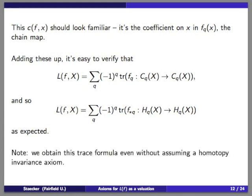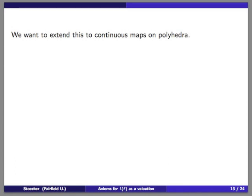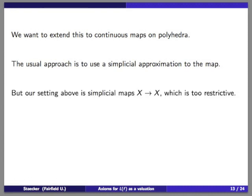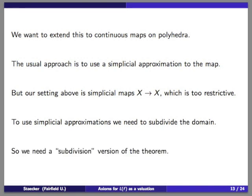If you take this invariant over the whole space, you get the trace in the chains, which equals the trace in homology by the Hopf trace theorem, so you do get something agreeing with the expected Lefschetz number. Interestingly, we obtain the trace formula without assuming a homotopy invariance axiom — it is entirely combinatorial at this point. We have a kind of homotopy for free. To extend this to continuous maps on polyhedra, the usual approach is to use simplicial approximations, but simplicial maps X to X are too restrictive — we need to subdivide the domain.